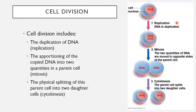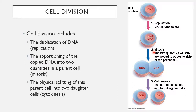The second step in cell division is mitosis — this is where the two pieces of DNA are moved to opposite sides of the parent cell. The third and final stage is called cytokinesis — this is where the one parent cell physically splits apart and becomes two daughter cells. The three stages of cell division are replication, mitosis, and cytokinesis.